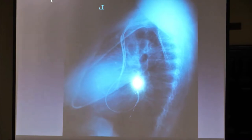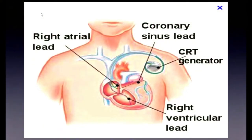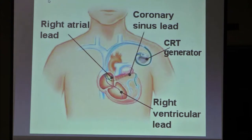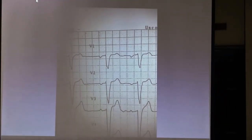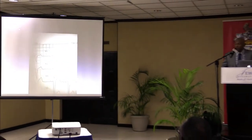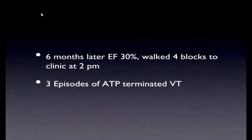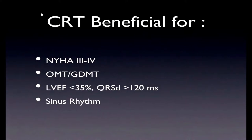In a simpler drawing: one lead in the atrium, one in the ventricle, and one through the coronary sinus. Her ECG before implant showed a wide QRS with a left bundle branch pattern. The morning after, notice the narrowing of the QRS. Six months later, her ejection fraction had doubled to 30 percent. She walked four blocks to the clinic, and we know she had three episodes of painless device therapy — confirming these patients benefit: NYHA class 3-4, already on medical therapy, low EF with widened QRS.